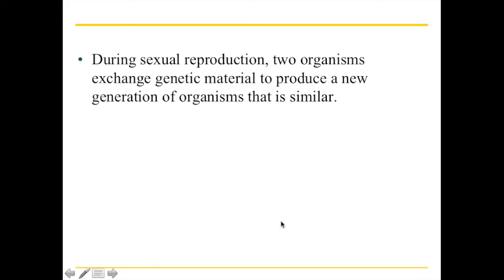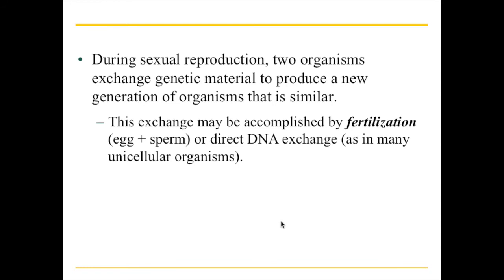Sexual reproduction is fundamentally different because you need two organisms in the process. Two organisms exchange genetic material, and the product is a new generation of organisms that looks very similar but is not genetically identical. This works by taking an egg cell and a sperm cell, which meet and fuse — a process called fertilization — resulting in a new single cell that is the start of the next generation. There are also some organisms by which DNA can be directly injected from one organism to another.